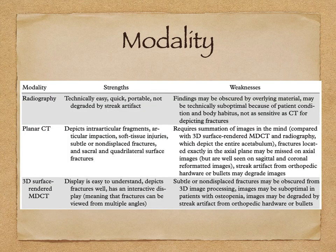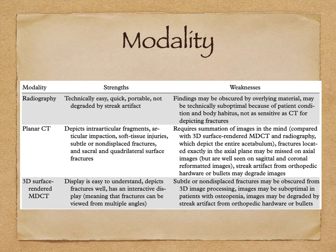Looking at the various modalities available, we have plain radiographs which are technically easy, quick, and can be done in a portable manner. However, they can be obscured by overlying materials and can be technically suboptimal because of body habitus and gases in the stomach, and they are not as sensitive as CT scan. Plain CT and 3D rendering depict intra-articular fragments, impaction, soft tissue injuries, even subtle and non-displaced fractures, and sacral and quadrilateral surface fractures not visible on x-rays.